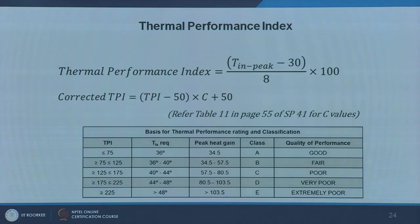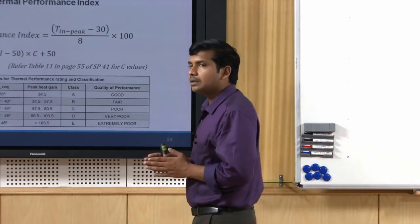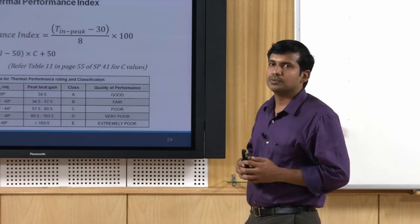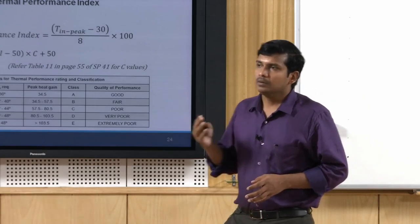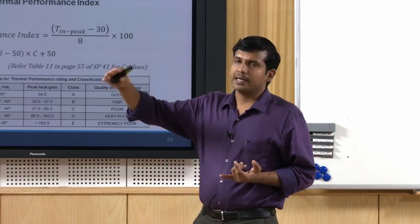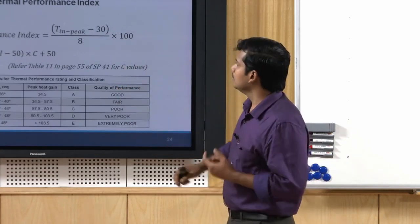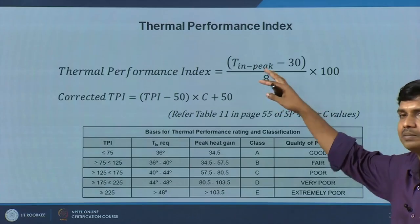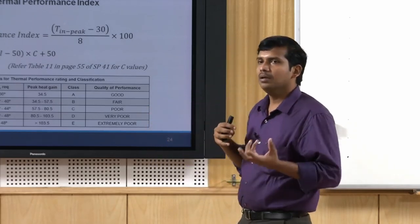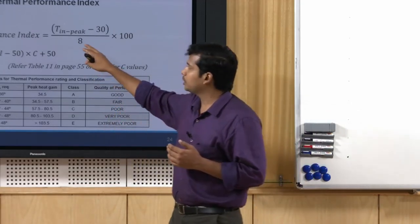Relating back to a previous module on thermal comfort — radiant asymmetry — we discussed allowable cold wall versus hot wall conditions. ISO and ASHRAE codes specify the allowable increase in wall surface temperature compared to air temperature beyond which radiant discomfort is felt. The national code (developed in the 1970s and 80s) estimated that up to 38 degrees surface temperature, radiant discomfort will not be much impactful; beyond 39 to 40 degrees it causes more problems.